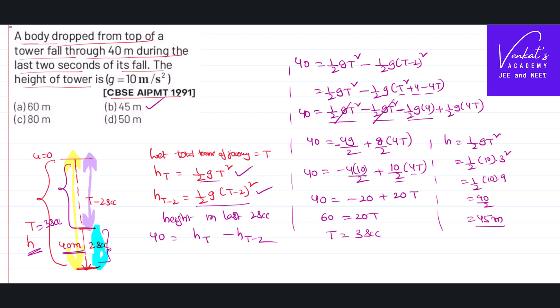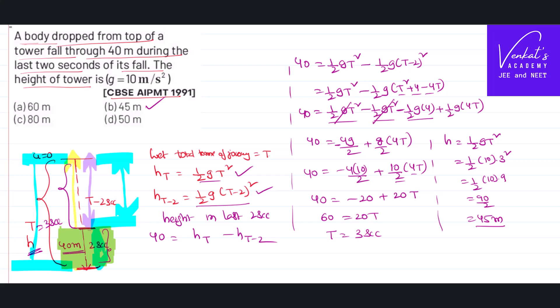So to solve this problem, we have used a beautiful concept: the distance covered in the last 2 seconds equals the total distance covered in the total time, minus the distance covered in all the time other than those last 2 seconds. I have just used that concept and solved the problem. Thank you for watching.